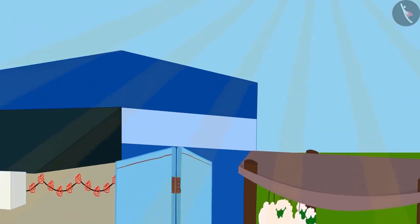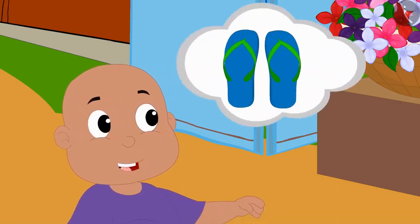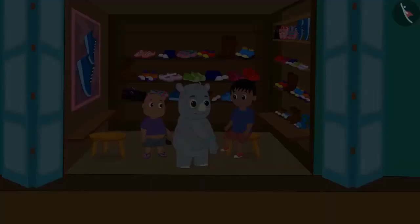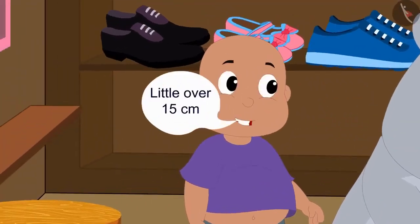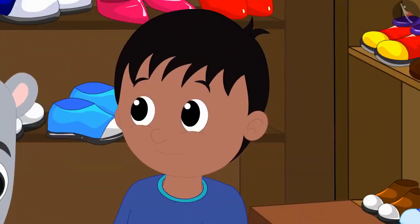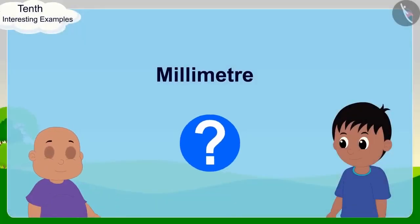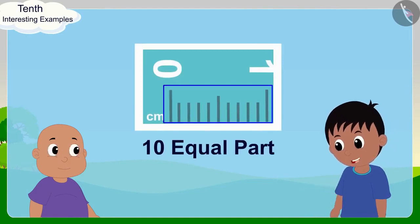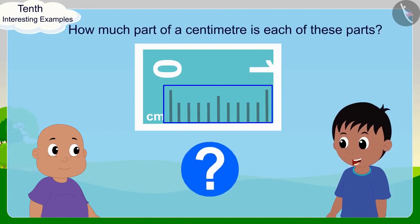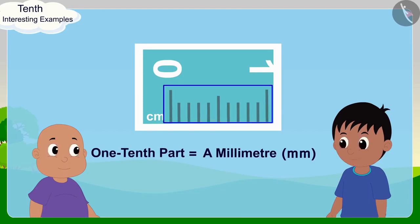Babalu suggests buying new slippers so they can have fun on the beach. At the shoe shop, Gaggu measured Raju's foot. Babalu tells Raju: Your foot is a little over 15 centimeters — it measures 15 centimeters and 4 millimeters. Babalu asks what a millimeter is. Raju explains: There are 10 equal parts of a centimeter on a scale, so each part is 1 tenth of a centimeter. 1 tenth of a centimeter is called a millimeter.